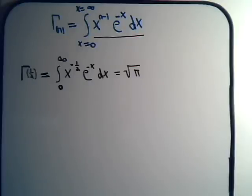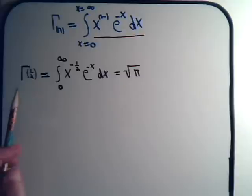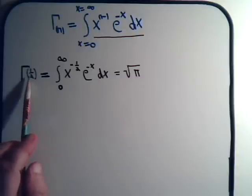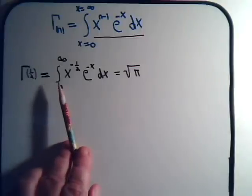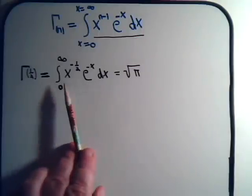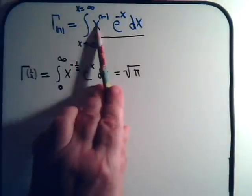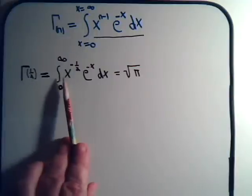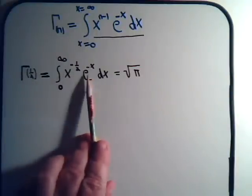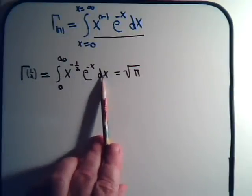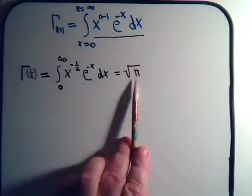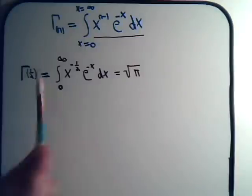We've been considering some basic properties of the gamma function. In this video we want to prove that the gamma function of one-half — which is the integral from zero to infinity of x to the minus one-half times e to the minus x dx — is going to equal the square root of pi.